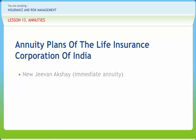New Jeevan Akshay — immediate annuity: the purchase price is payable in a lump sum and the annuity payment commences after one year, six months, three months, or one month after the date of purchase. If desired by the annuitant, payments can be made certain for five, ten, fifteen, or twenty years and thereafter so long as the annuitant is alive.